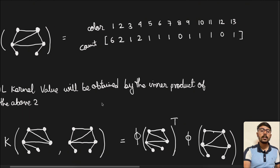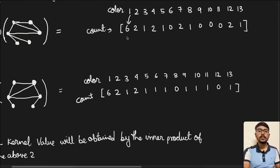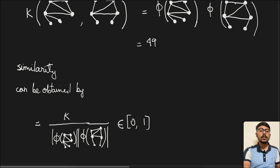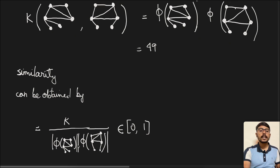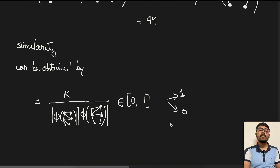We find the Weisfeiler-Lehman kernel value by performing the inner product of the two color count vectors — we take the transpose and compute the dot product, obtaining 49. For similarity, we normalize: divide K by the product of the norms of the two graph vectors, which gives a value in the range zero to one. When this tends to one, the graphs are isomorphic; when it tends to zero, they are different. This is how the Weisfeiler-Lehman kernel determines whether two graphs are structurally identical.